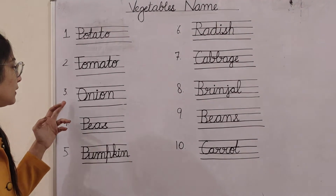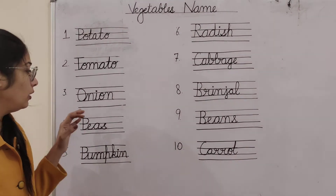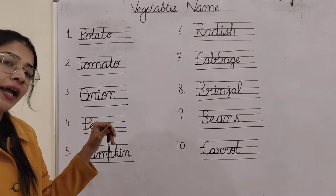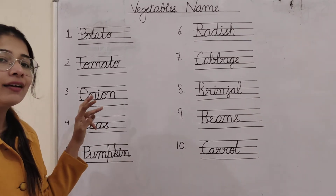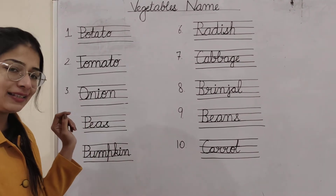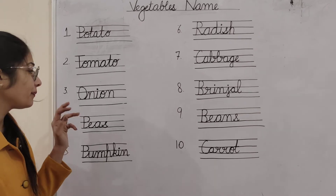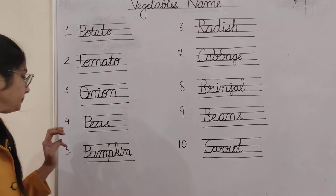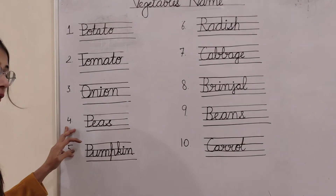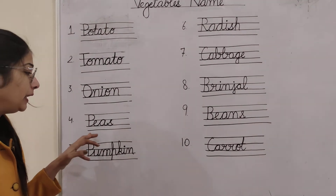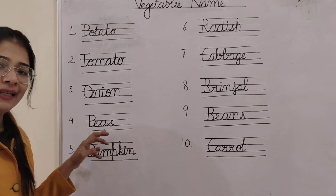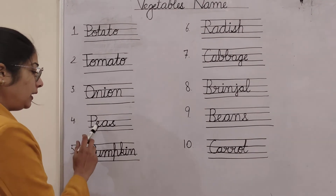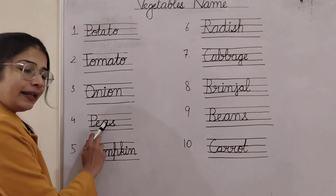Now see the third one. Onion. O-N-I-O-N. Easy hai? O-N-I-O-N. Onion. Number 4 is peas. P-E-A-S. P-E-A-S.